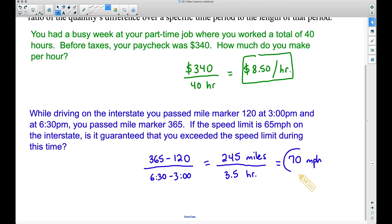Now notice here with this answer, this is your average rate of change. Now it is not guaranteed that you were driving exactly 70 miles per hour during that entire trip. You could have been going slower than that. You could have been going faster than that. But the only way that you're ever going to be able to travel 245 miles in three and a half hours, your average speed has to be 70 miles per hour. So notice it says if the speed limit is 65 miles per hour on the interstate, is it guaranteed that you exceeded the speed limit during this time? Absolutely. Because your average speed is greater than the speed limit.